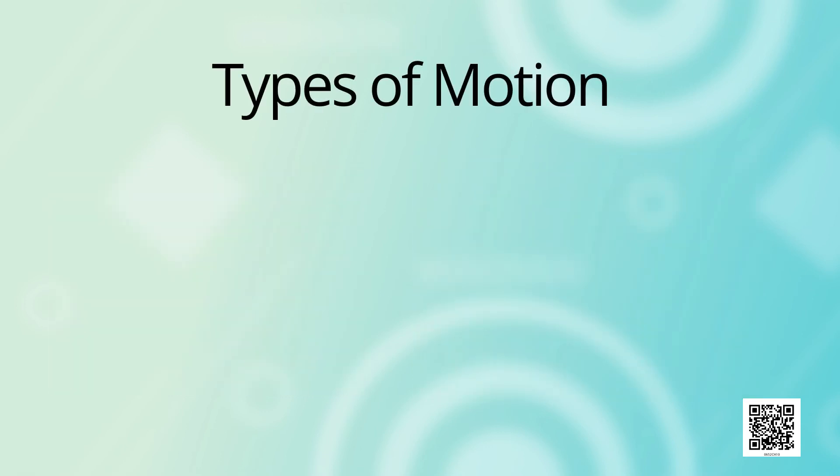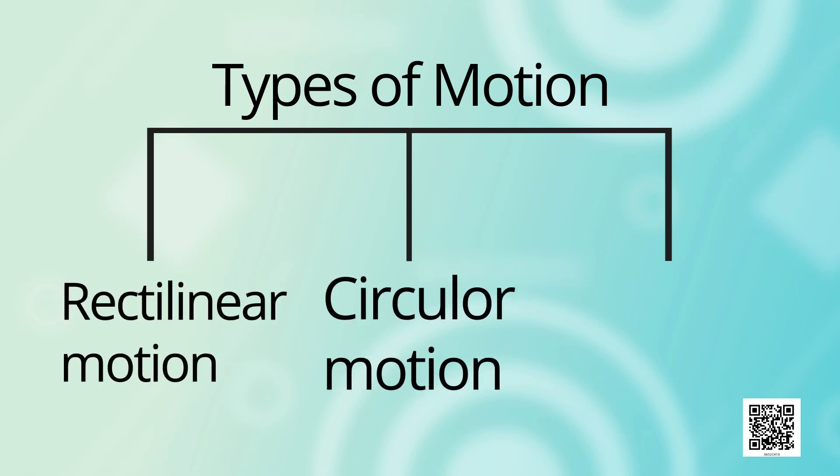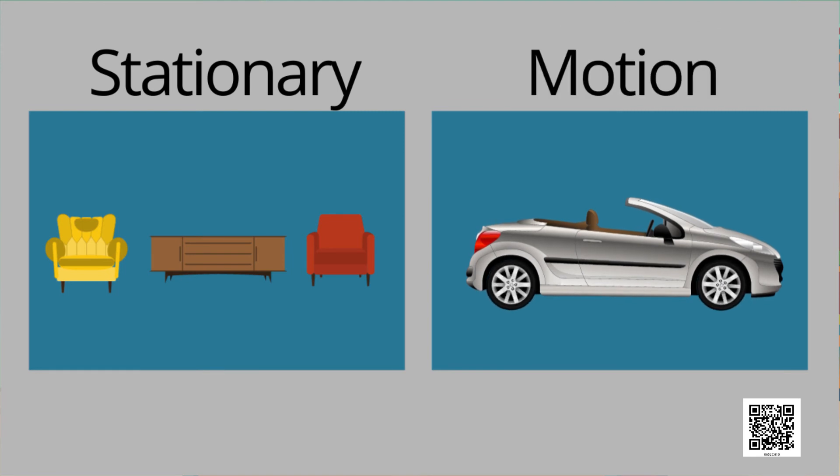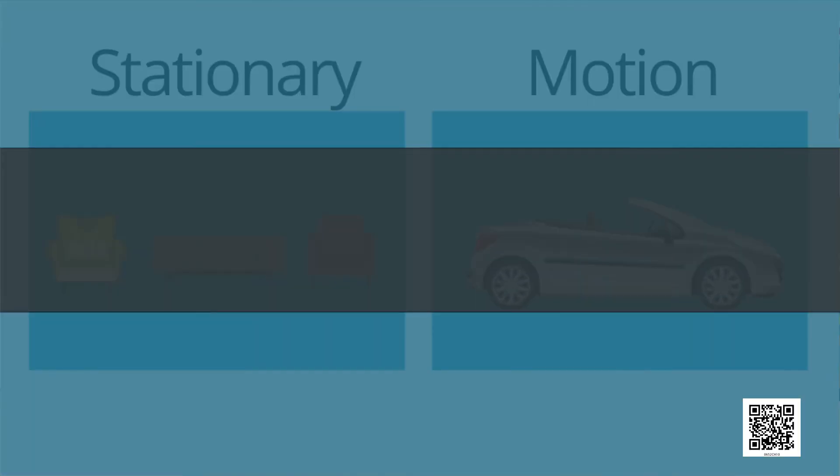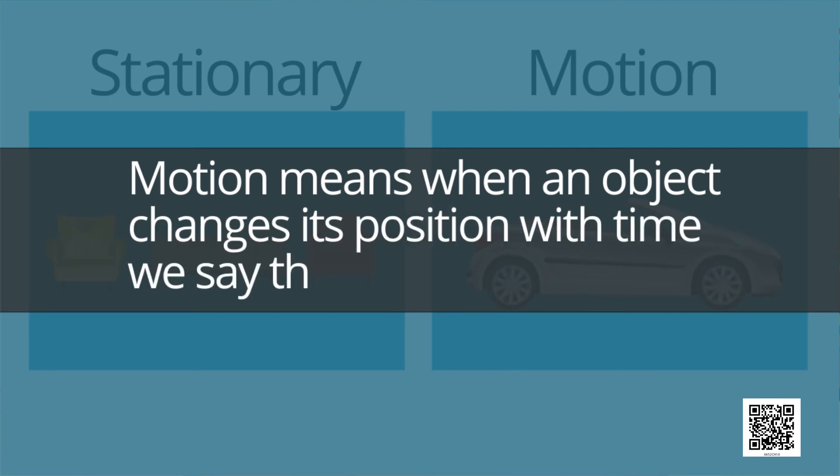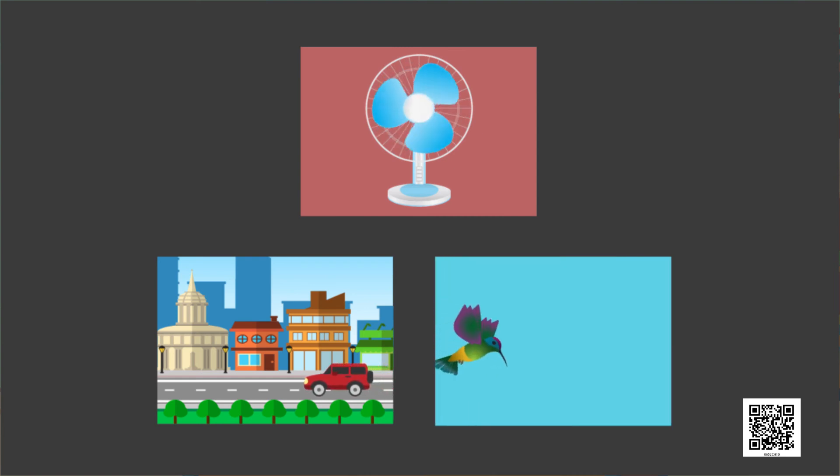Types of motion. There are three types of motion. Rectilinear motion, circular motion and periodic motion. We see many things around us. Some are stationary, whereas some objects are in motion. Motion means when an object changes its position with time. We say that it is in motion. For example, a table fan, a moving car and a flying bird.